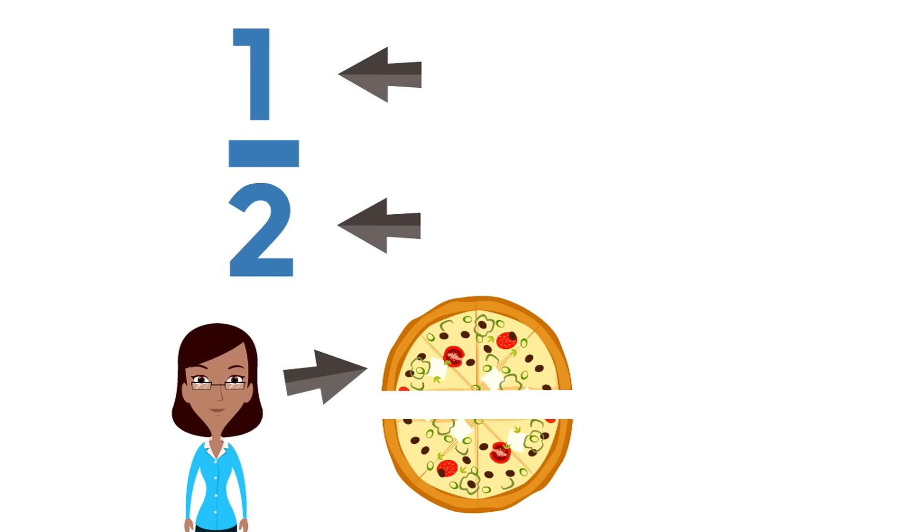The bottom number of a fraction is called the denominator. The denominator is the total number of parts. The top number is called the numerator. The numerator tells us how many parts we are talking about.